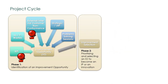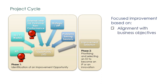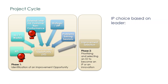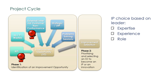In phase two, the improvement selection phase, improvement opportunities are prioritized based on their merit. The figure of merit is calculated with seven factors such as alignment to business objectives, impact of the project, its complexity, and others. When a project leader is available to take on a new project, a high-priority improvement opportunity will be allocated to her based on her expertise, project experience, and role in the organization. The improvement opportunity then becomes an improvement project.